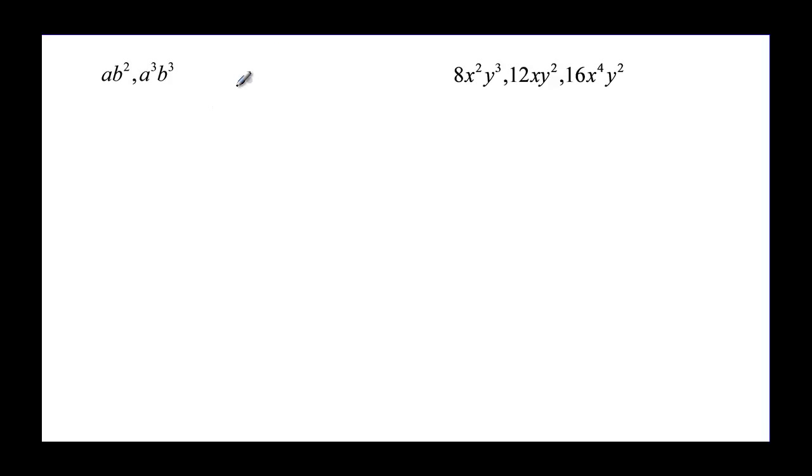Now what happens when we have variables? With variables, you want to take the smallest exponent because it has to be common to both of them. So I have an A, and I have two factors of B, and this for AB, and for A cubed, B cubed, I have A times A times A, and B times B times B.